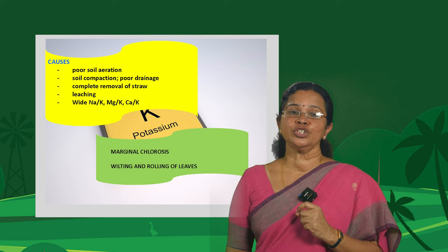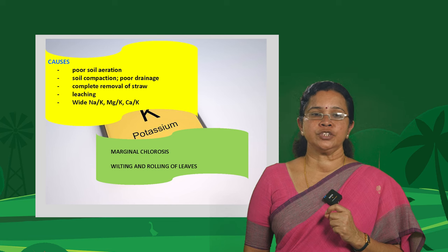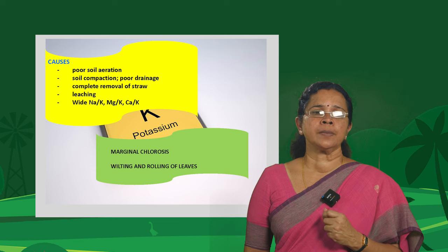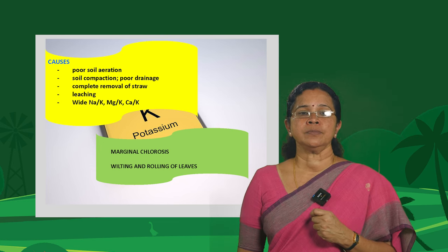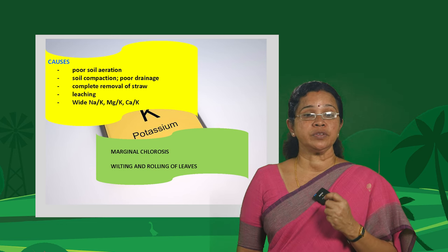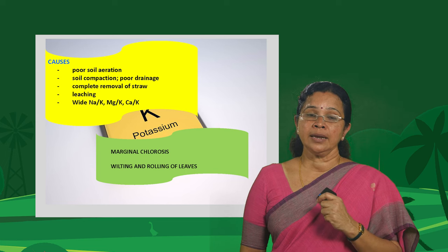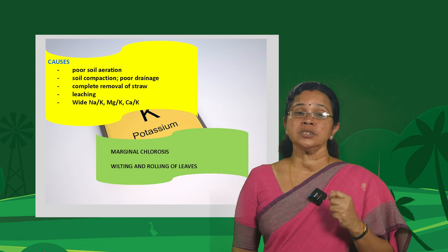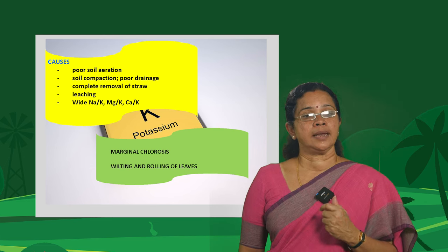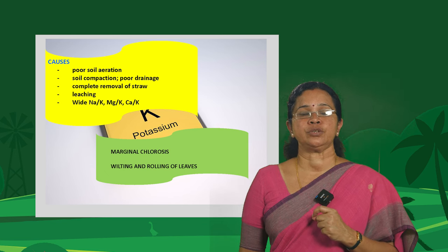Coming to the soldier nutrient, potassium — what are the causes of potassium deficiency? Poor soil aeration — that is, waterlogged soil — soil compaction, poor drainage, and complete removal of straw, which is one of the major sources of potassium. When entire straw is removed from the field, large amounts of potassium are removed from the soil. Leaching is another cause, as potassium is a mobile element. Unfavorable elemental ratios also play a role.